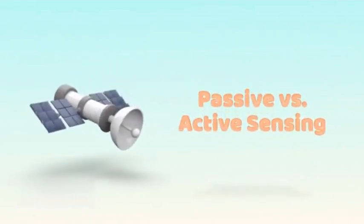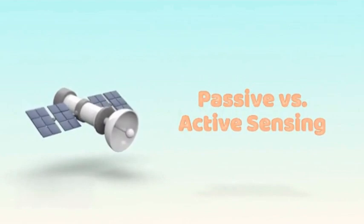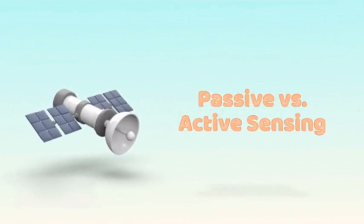In the field of sensing technology, there are two primary methodologies used to gather information about the environment: passive sensing and active sensing.